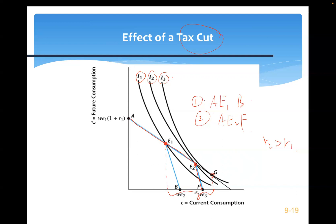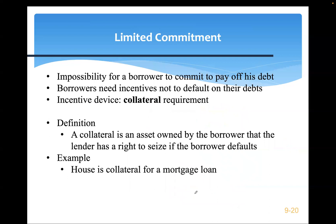Ricardian equivalence therefore fails. Now we move to the second reason for financial market imperfection: limited commitment. Limited commitment shows up as the impossibility for a borrower to commit to paying off debt, because it's always tempting to default — essentially like walking away and stealing money from the lender.